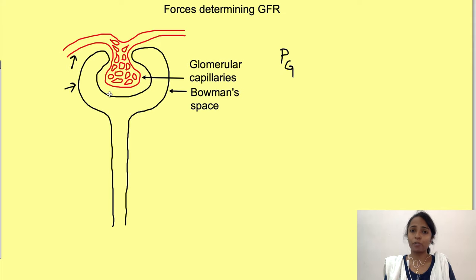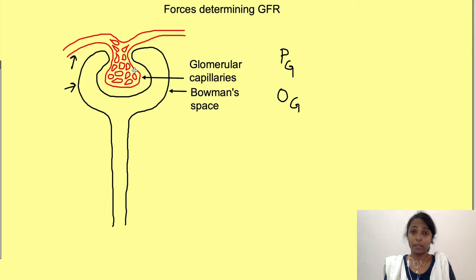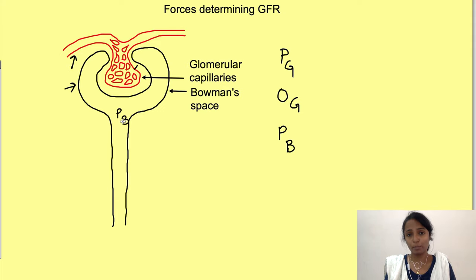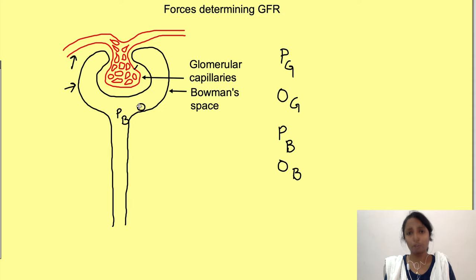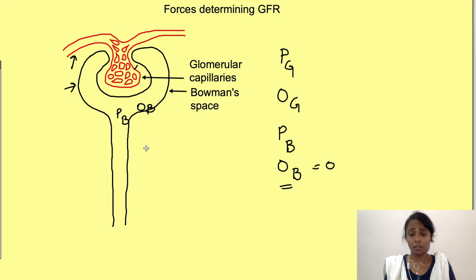There is hydrostatic pressure of the capillary due to the fluid present in the capillary, then oncotic pressure in the capillary due to plasma proteins. There is also hydrostatic pressure in the tubules — the Bowman's space — because of filtered fluid, and oncotic pressure in the tubules, which is essentially zero because plasma proteins are not filtered.